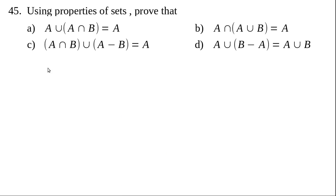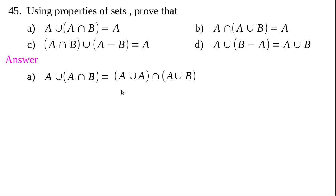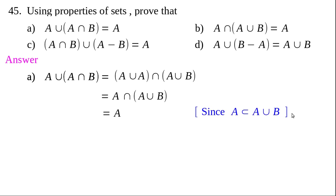Now let us prove these using properties. Part (a): A∪(A∩B). By the distributive property, A∪(A∩B) = (A∪A)∩(A∪B) = A∩(A∪B). Since A⊂A∪B, the intersection of two sets where one is a subset of the other gives the subset. Therefore A∩(A∪B) = A.